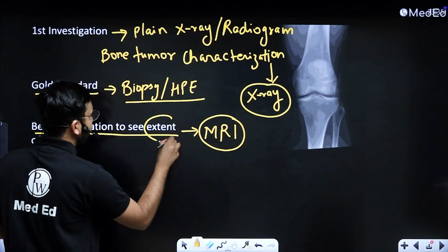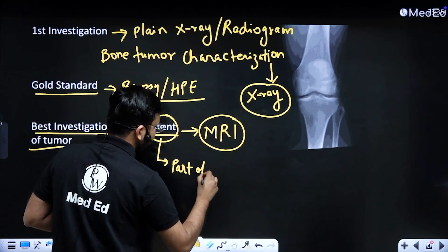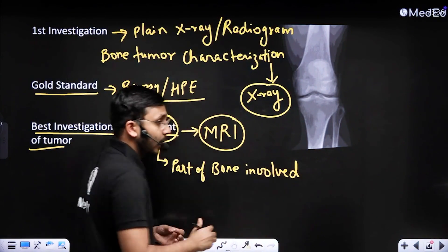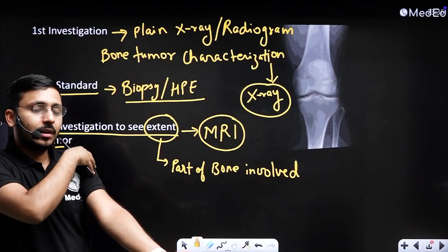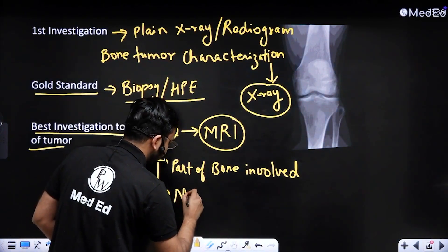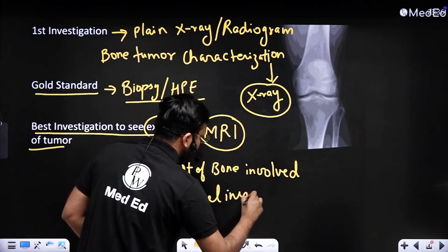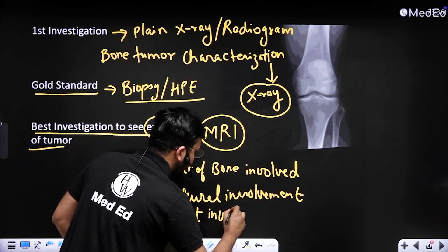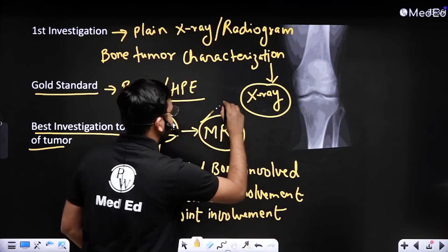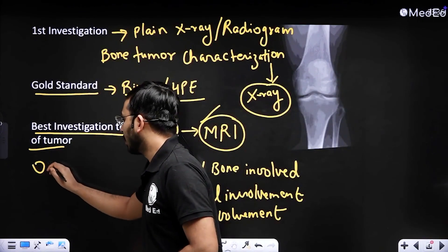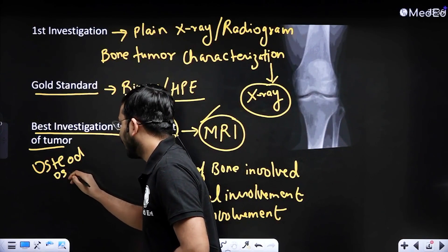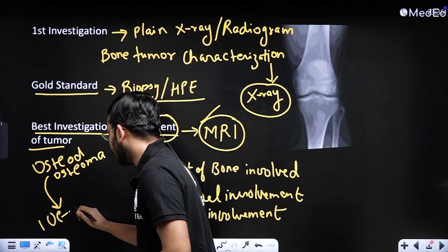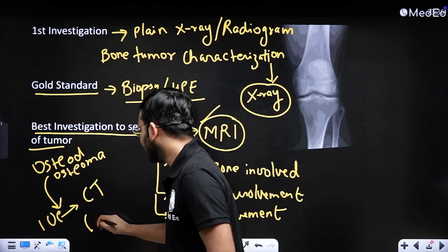By 'extent of the tumor' I mean the part of the bone involved — what length of the bone is affected — which is important for surgical planning. It also includes neural involvement and joint involvement. For all of these, the investigation of choice is MRI. There is one exception: for osteoid osteoma, the investigation of choice is a CT scan — specifically a non-contrast CT scan, since we are dealing with bones.